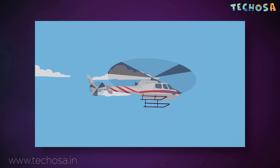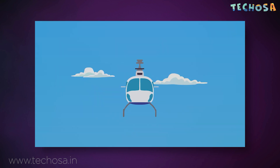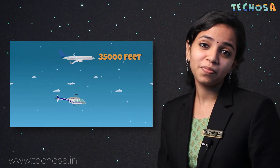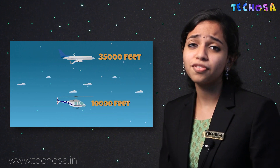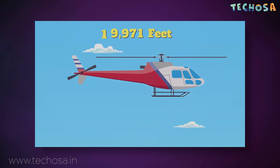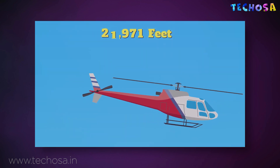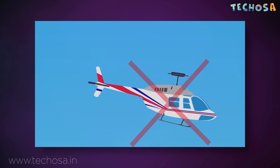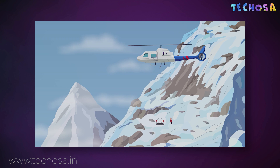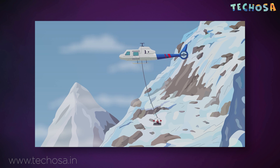Helicopters move in different directions by generating more lift on one side than the other. So when they need to go left, they create more lift on the right, and vice versa. Helicopters cannot fly as high as airplanes. It is common for commercial airplanes to fly at an altitude of 35,000 to 40,000 feet. For helicopters, the range is much lower, as they don't usually fly over a height of 10,000 feet. The higher you go, the lower the air density becomes, which reduces the amount of lift the blades can generate as the air becomes too thin. This is one of the reasons why it is considered dangerous to fly helicopters in high-altitude regions. However, specially designed helicopters can fly much higher than regular helicopters and can be used for special purposes.